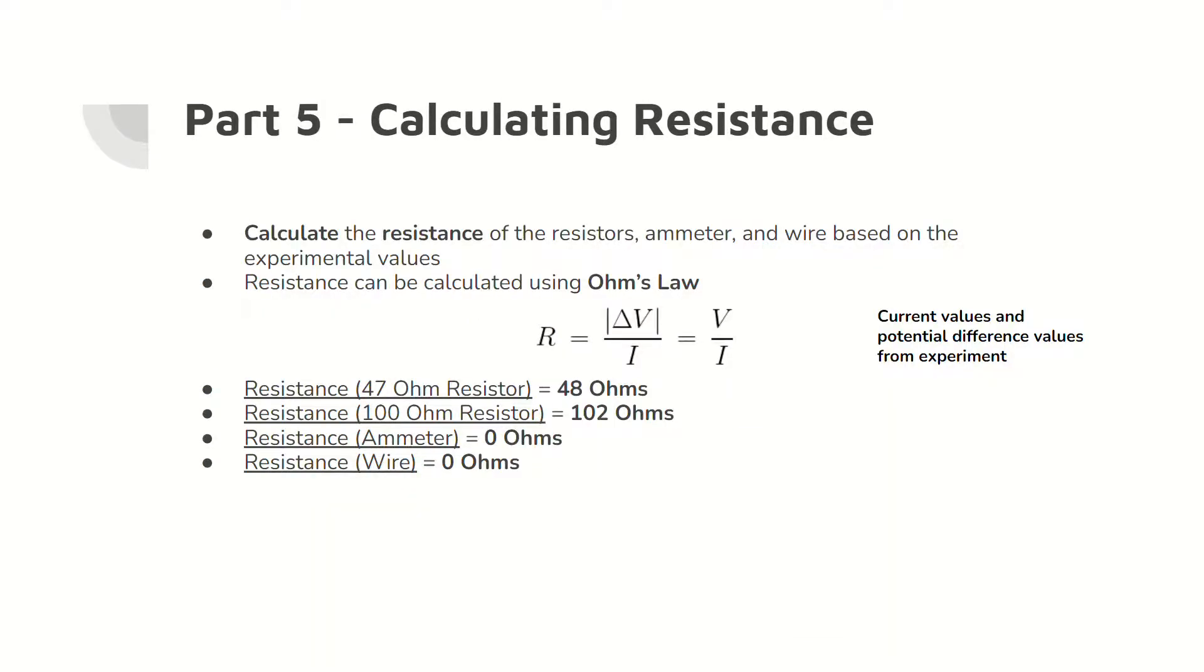In part five, the resistance values for different components of the simple circuit were calculated. Using Ohm's law and the experimentally determined values, the resistances of these components were calculated and are shown here.